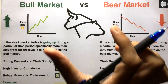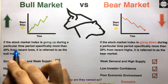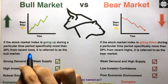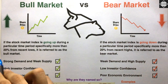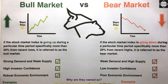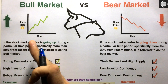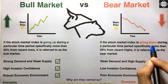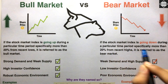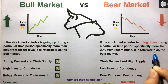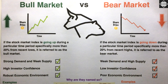If you want to be technical: if the stock market index is going up during a sustained time period, specifically more than 20% from recent lows, it is referred to as a bull market. The complete opposite situation is the bear market — if the stock market index is going down during a particular time period, specifically more than 20% from recent highs, it is referred to as the bear market.